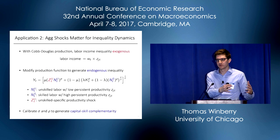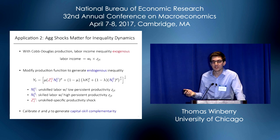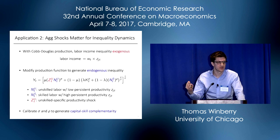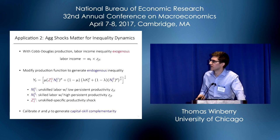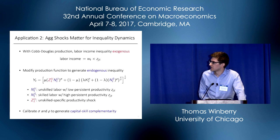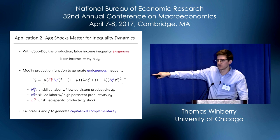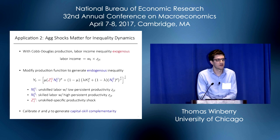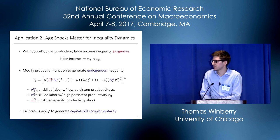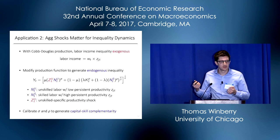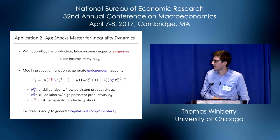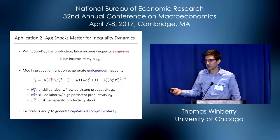The second application examines how aggregate dynamics shape distributions over time. The Cobb-Douglas production function is not well-suited to study this because the distribution of labor income is basically exogenous, coming only from exogenous labor productivity shocks. So we modify the production structure to have two groups of households—low-skilled and high-skilled—based on their labor productivity. These groups are not perfect substitutes with each other or with capital. We calibrate elasticities to generate capital-skill complementarity, as in Krusell, Ohanian, Ríos-Rull, and Violante.